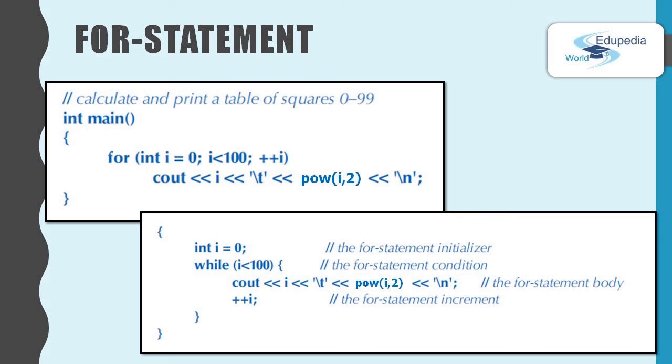A for statement is like a while statement except that the management of the control variable is concentrated at the top where it is easy to see and understand. We have written the previous program with the for loop like this.